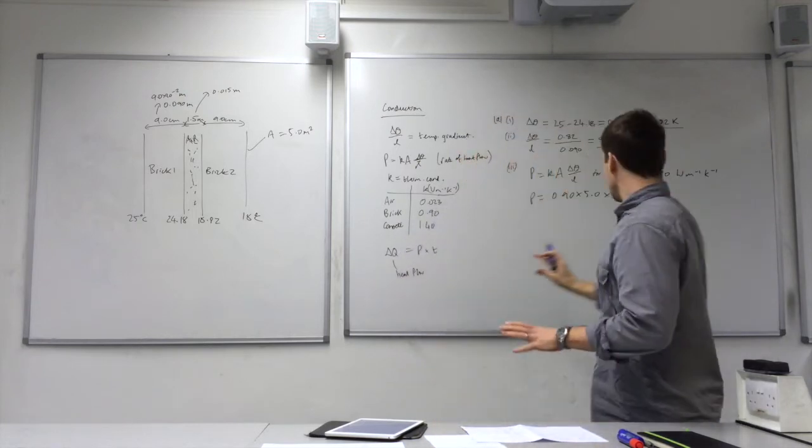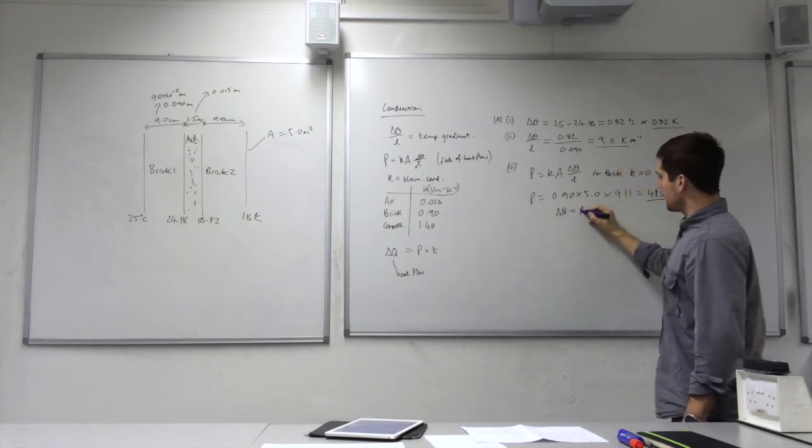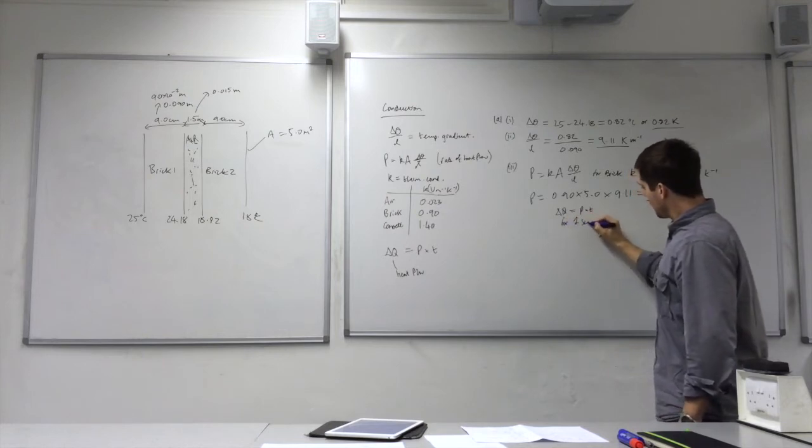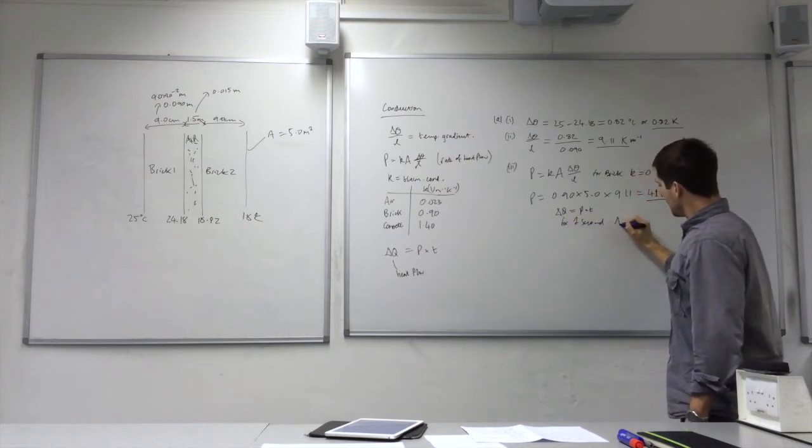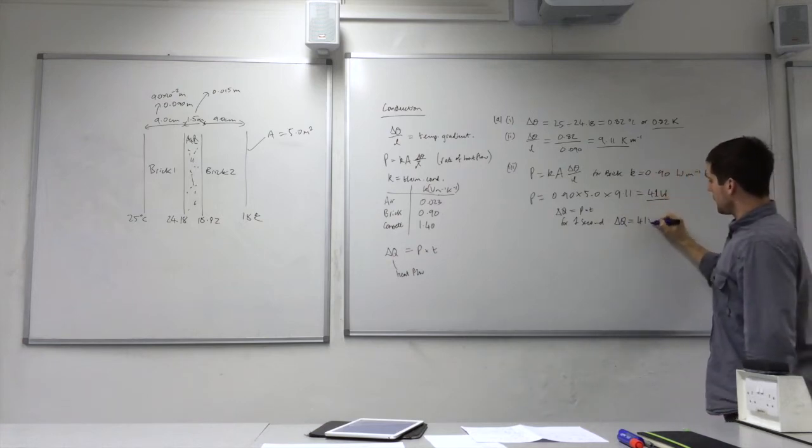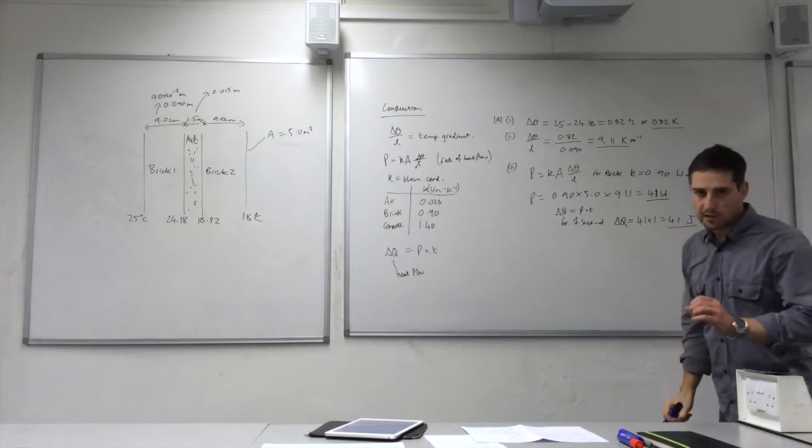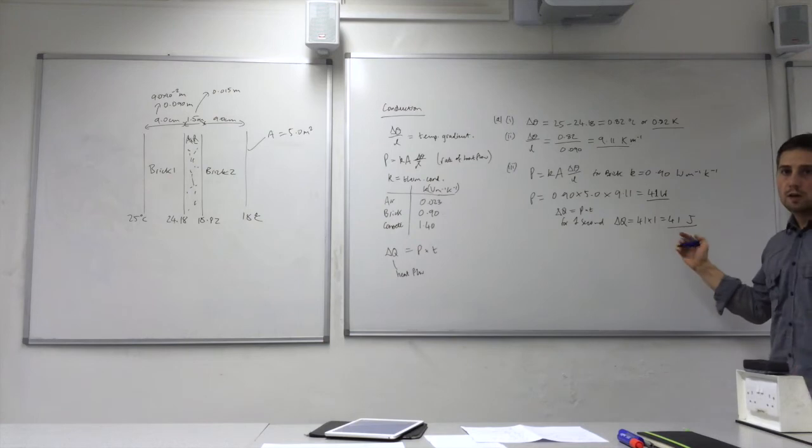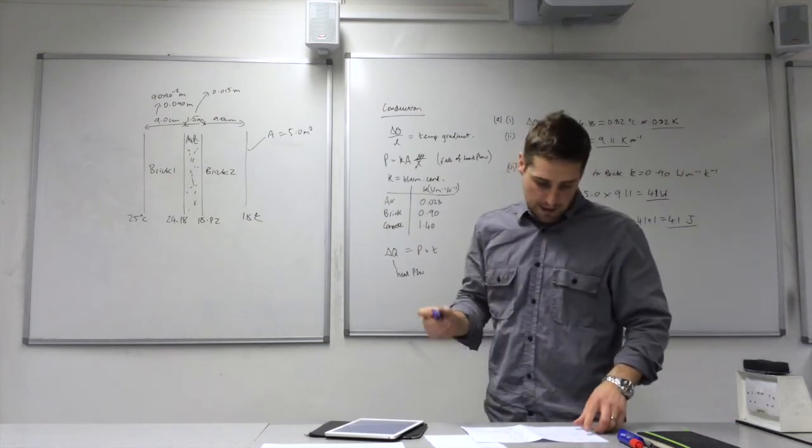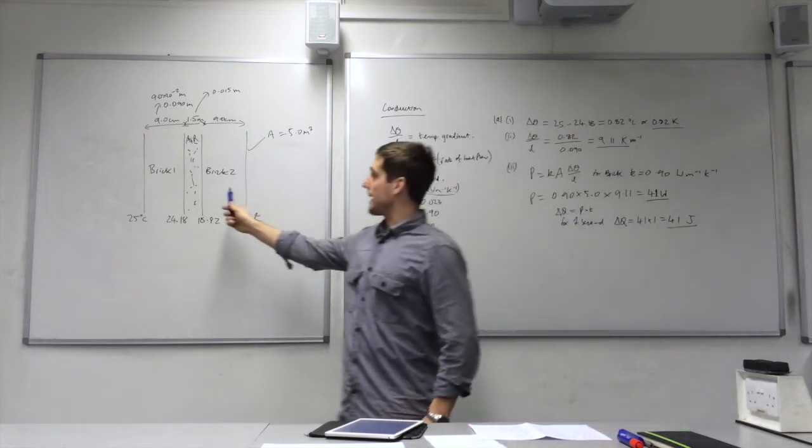That means that delta Q is equal to power times, so delta Q for one second would just be equal to 41 times 1, which is 41. So that means that in one second, 41 joules of heat energy would travel through the brick. Now we'll do the same series of calculations, but for this air gap here.